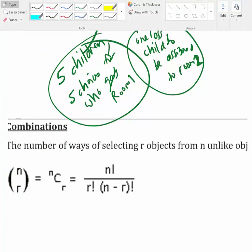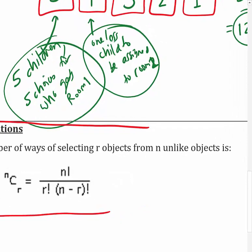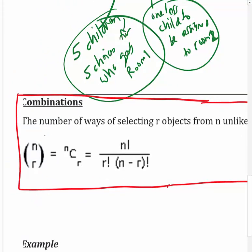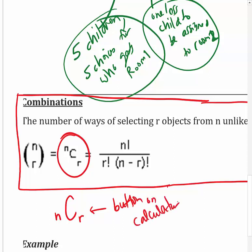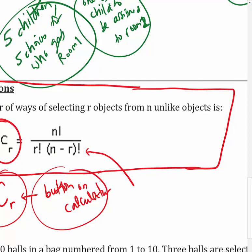With that in mind, factorials will come into play with the combination and permutation formulas. The number of ways of selecting r objects from n unlike objects uses this formula, written as nCr. The formula is n factorial over r factorial times (n minus r) factorial. That's important because there's a button on your calculator for it.